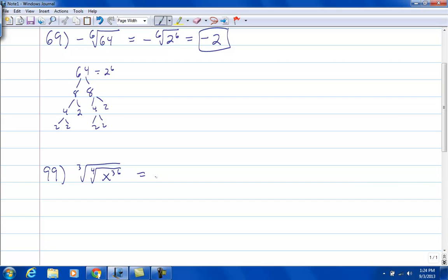and make it the 12th root, or you could say the 4th root of x to the 36th is going to be, 36 divided by 4 is 9, and the cube root of x to the 9th, 9 divided by 3 is 3, so x cubed.